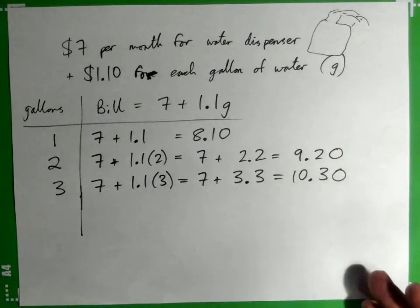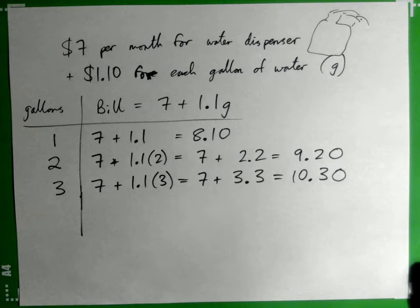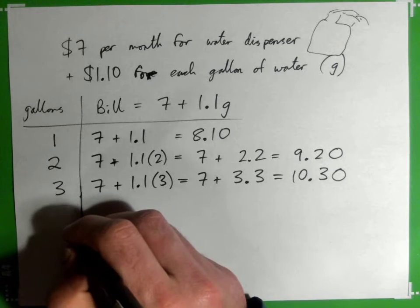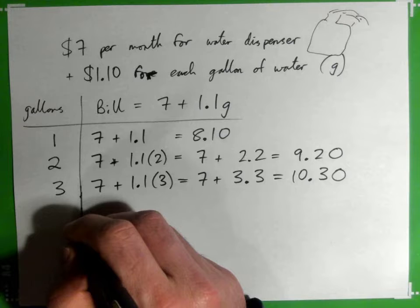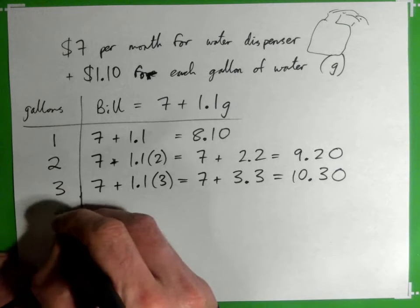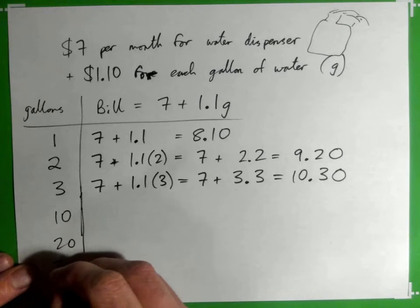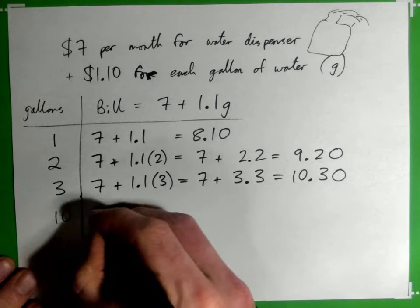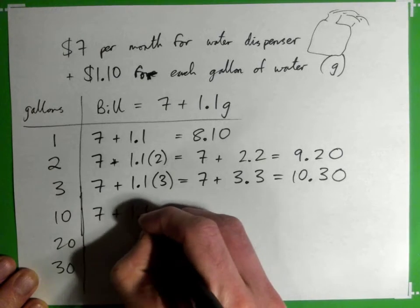And so it asks us for 10 gallons, 20, and 30, so we have to figure out 10, 20, and 30. So 10 gallons would just be 7 + 1.1 times 10.